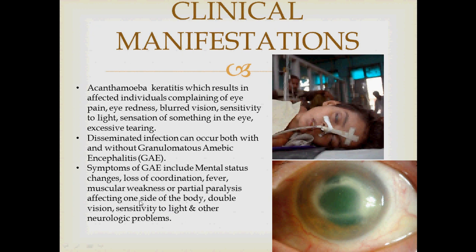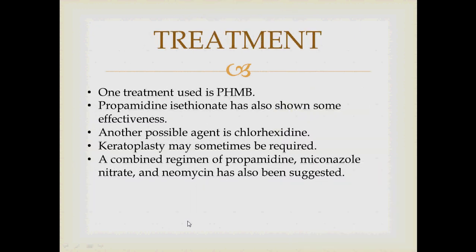Symptoms of granulomatous amoebic encephalitis include mental status changes, loss of coordination, fever, muscular weakness or partial paralysis affecting one side of the body, double vision or diplopia, sensitivity to light, and other neurological problems. For treatment of an Acanthamoeba infection, one agent used is PHMB — polyhexanide or polyhexamethylene biguanide — which is a polymer used as a disinfectant and antiseptic.